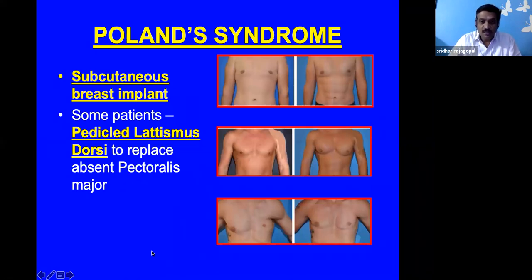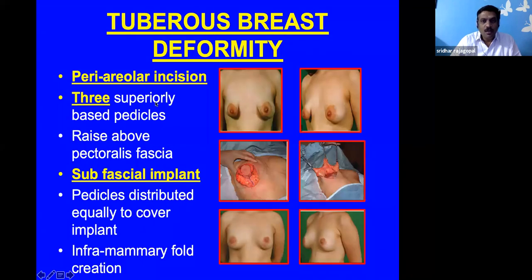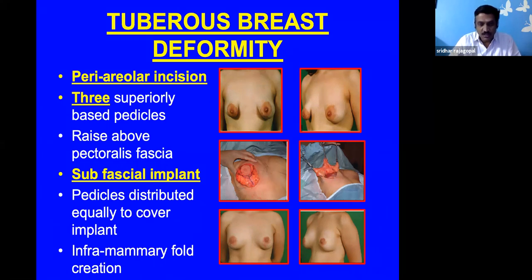Poland syndrome can occur in both men and women. Depending on the requirement, sometimes only an implant is needed. If there is significant deficiency of muscle and bone, we can use a pedicle latissimus dorsi flap to cover it. For tuberous breast deformity — one of the difficult conditions to treat — we use periareolar incisions, raise a superiorly based flap with three separate pedicles, place a sub-fascial implant below the pectoralis fascia, and wrap it with the pedicles to achieve a reasonable shape.